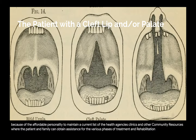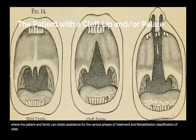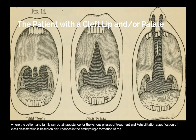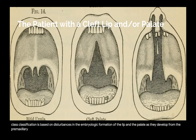Classification of clefts. Classification is based on disturbances in the embryologic formation of the lip and the palate as they develop from the premaxillary region toward the uvula in the definite pattern. There are seven classes.